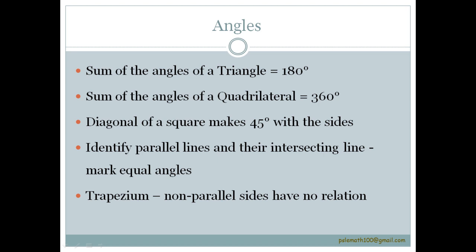Diagonal of a square makes 45 degrees with the sides. Similarly, when doing equations on angles, identify all the sets of parallel lines and their intersecting lines and mark the angles that are equal.